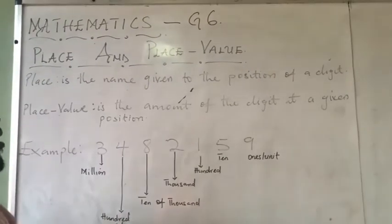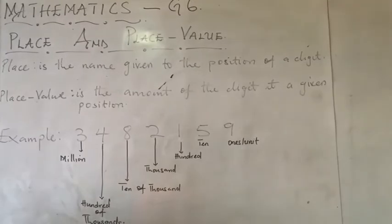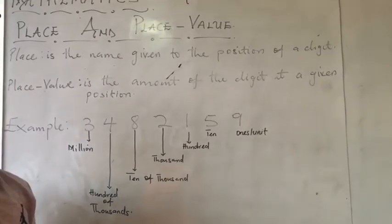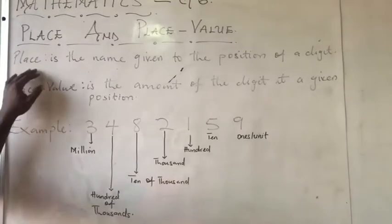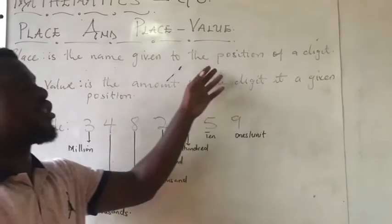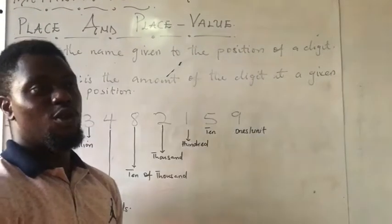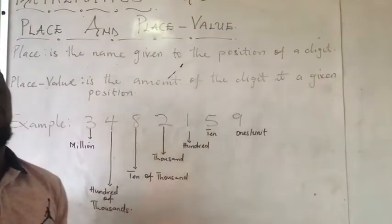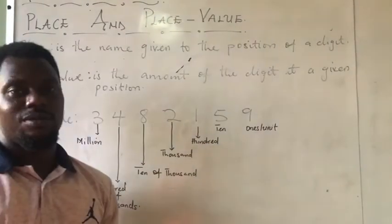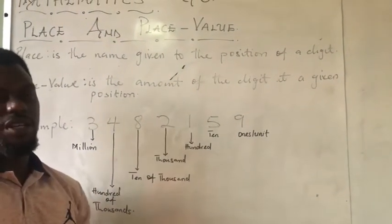When we talk about place and place value, it is just something simple that we are going to learn. When we talk about the place, the place is the name given to the position of a digit. So it tells you that in mathematics, every position of a digit has a name. And that is known as the place.